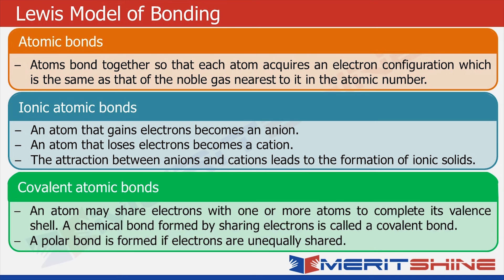We also have another kind of bond which is called a covalent bond, wherein an atom may share electrons with one or more atoms to complete its valence shell. And when this sharing does not happen equally, we get polar covalent bonds.